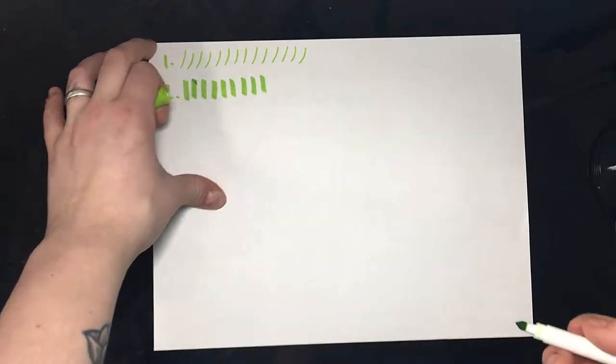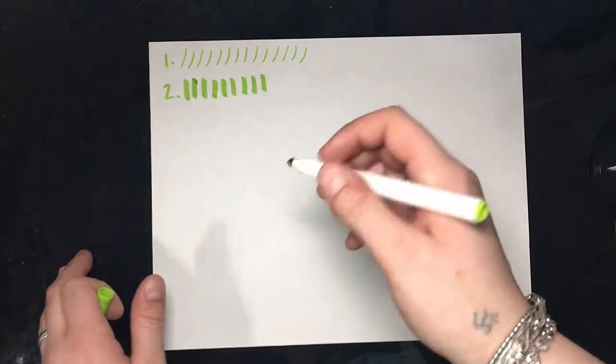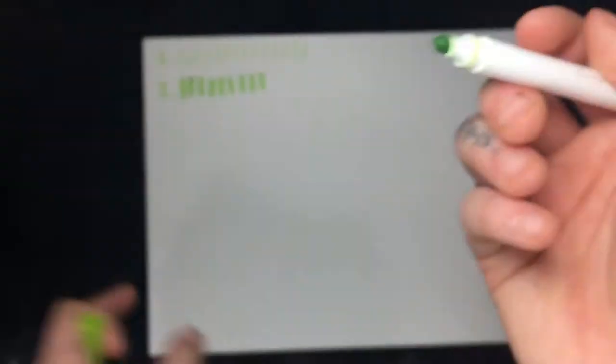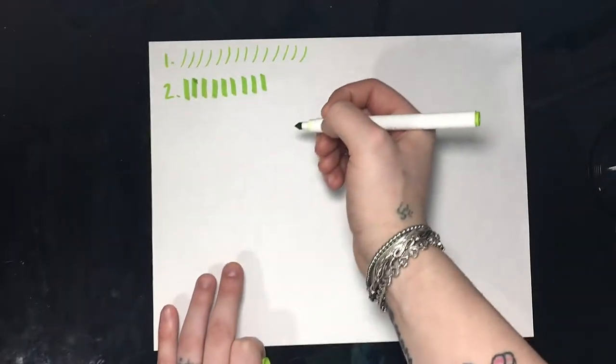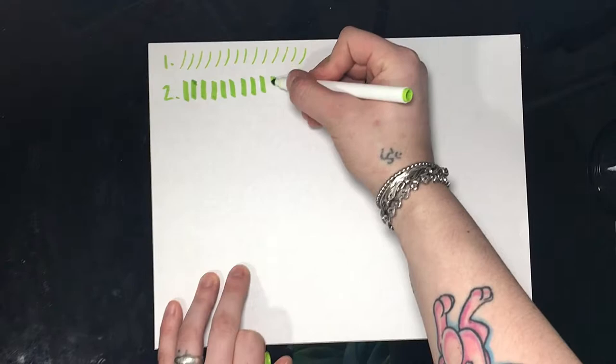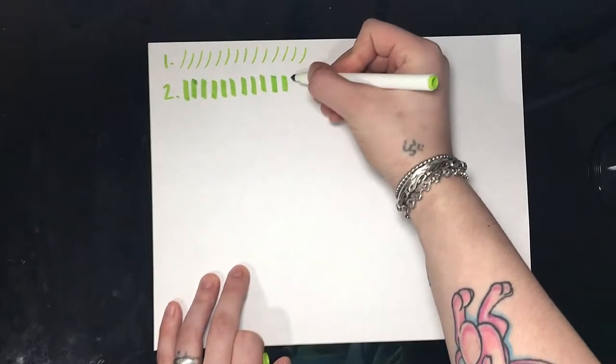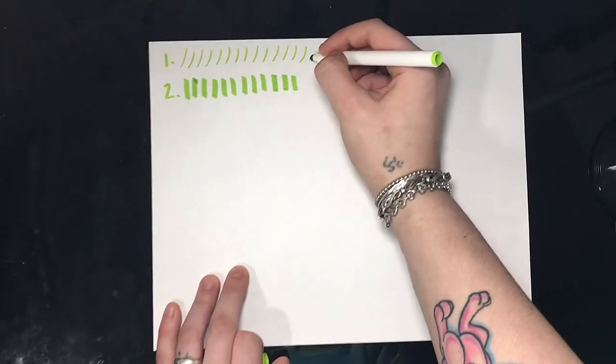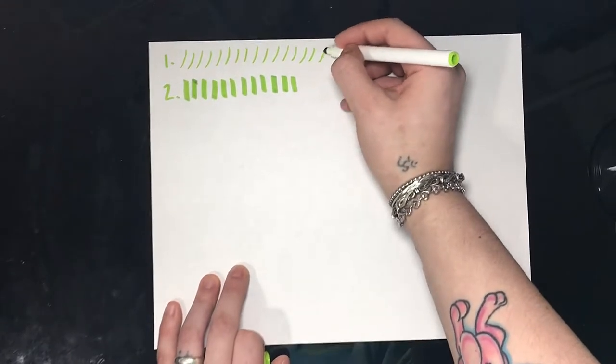Another thing to keep in mind is how you hold your pen. So I'm using a Crayola super tip marker and you want to hold your pen at like a 45 degree angle when you make your downstrokes and then you want to tip it up just a little bit when you make your upstrokes.